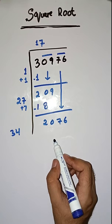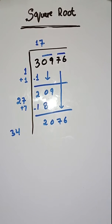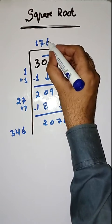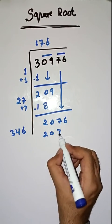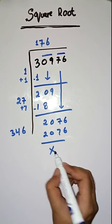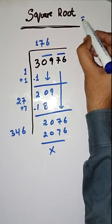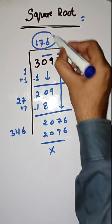Now we will take a number, six. Three forty-six, six are twenty seventy-six. So this is completely solved. So square root of thirty-nine seventy-six is equal to one seventy-six.